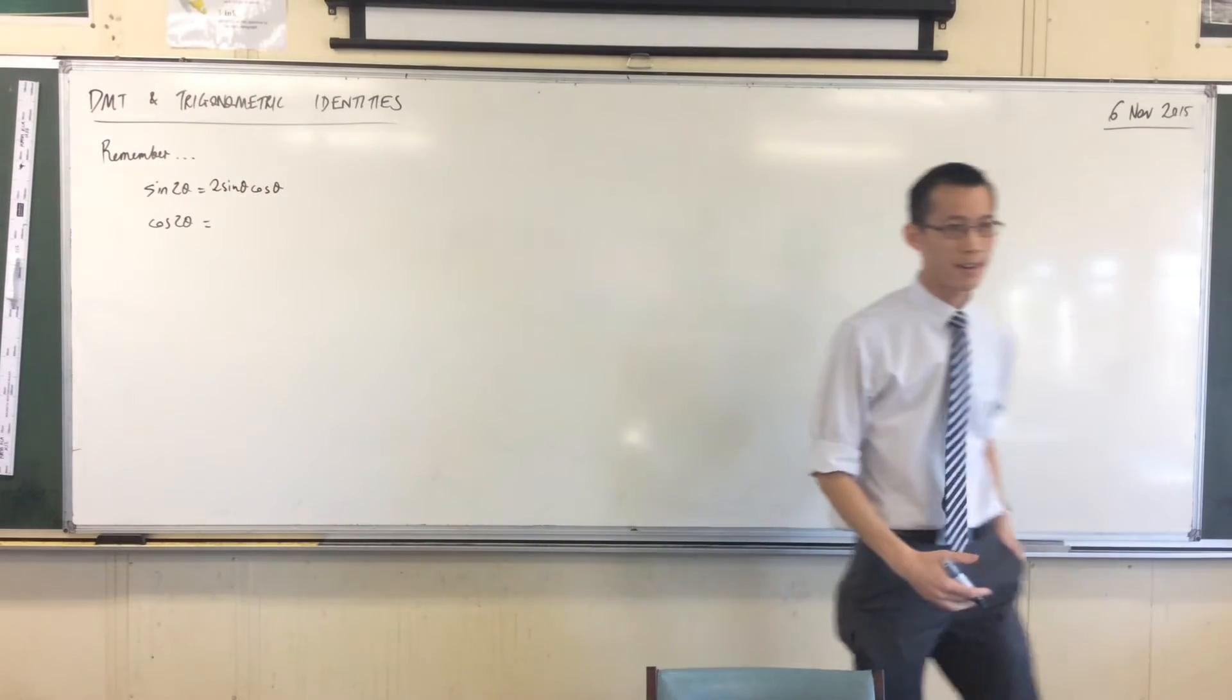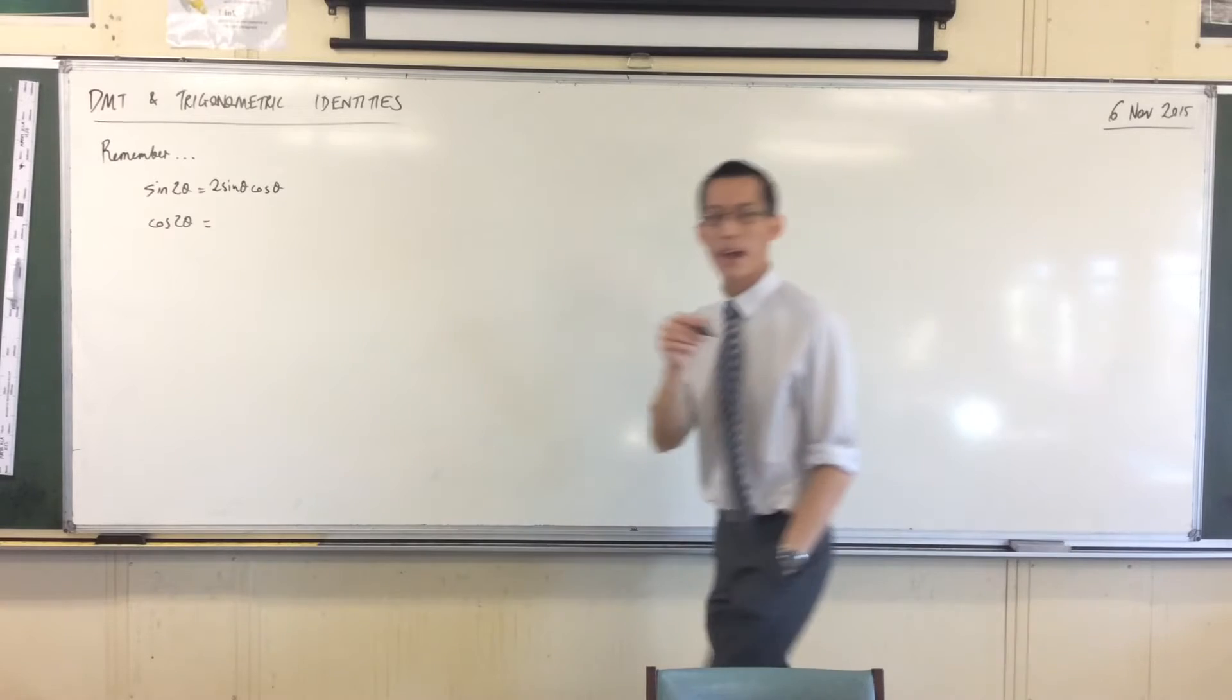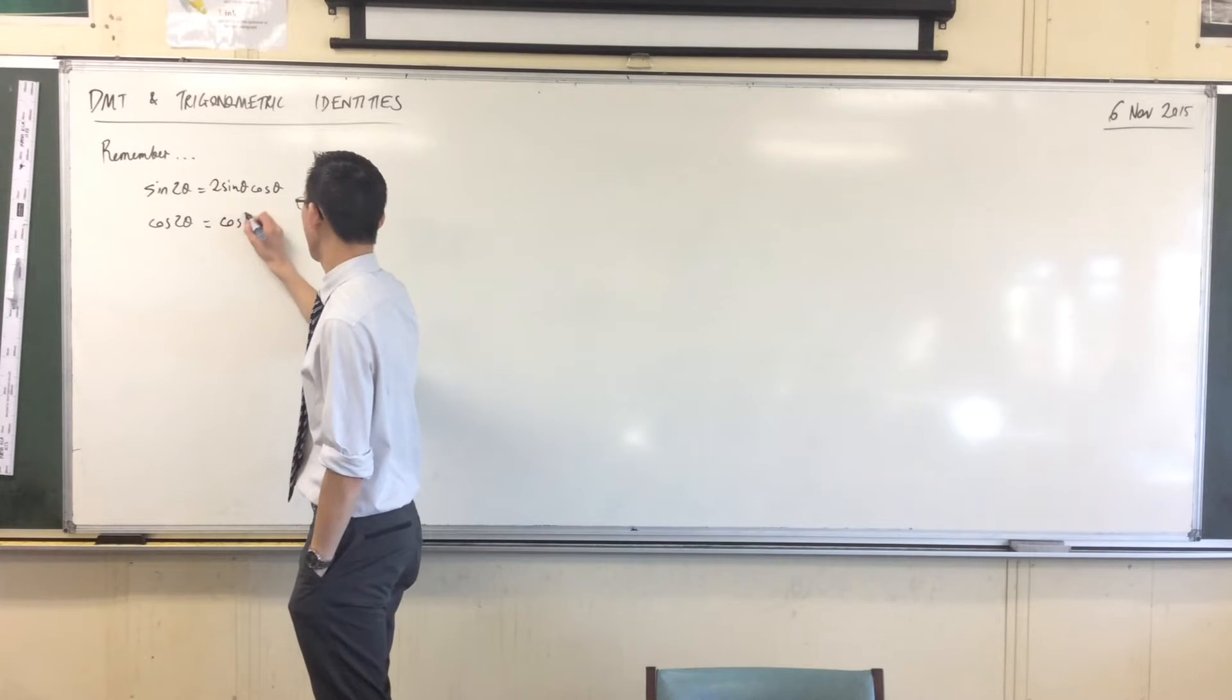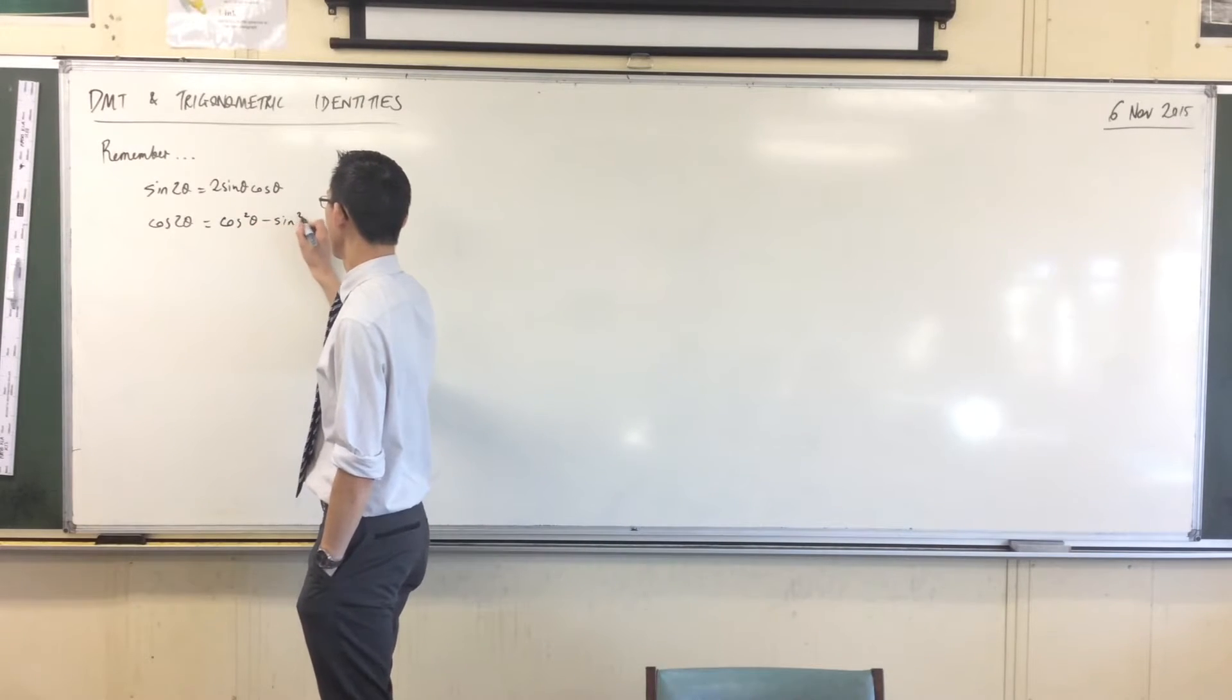And cos 2 theta on the other hand is cos squared minus sine squared. Cos squared theta minus sine squared theta.